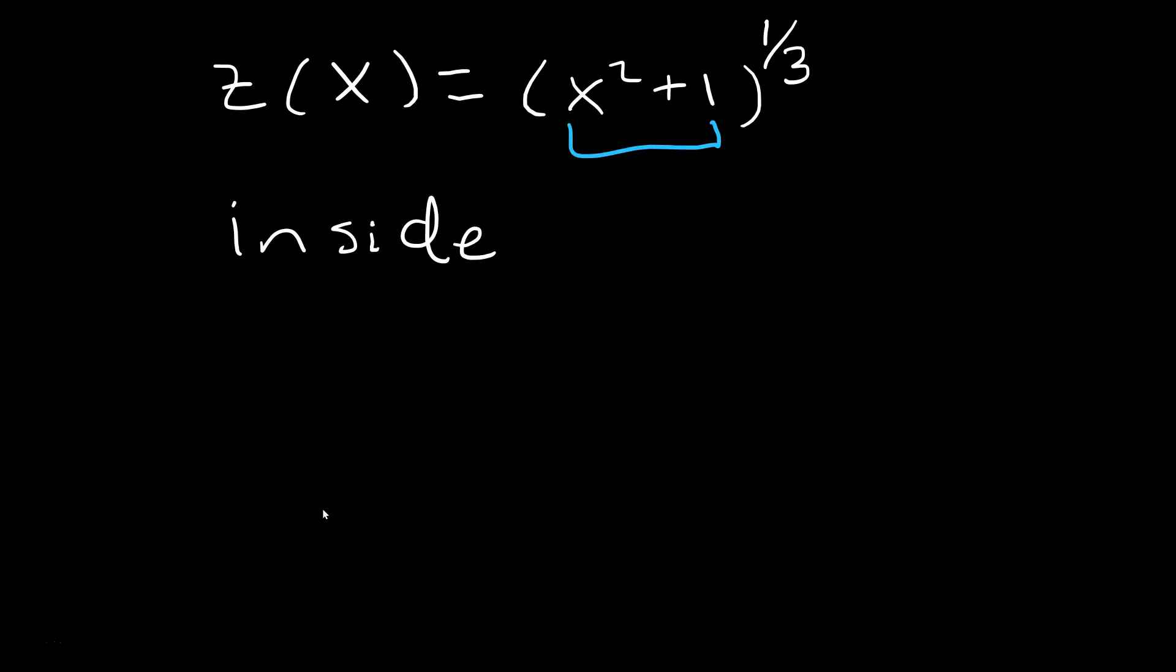Again, the inside is the one that acts first, so that's the x squared plus 1. When you put an x in, you first square it, then you add 1. And the outside function is the one that acts second. So for now, empty parentheses, and it's raised to the 1/3. The 1/3 acts after x squared plus 1.